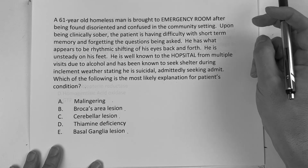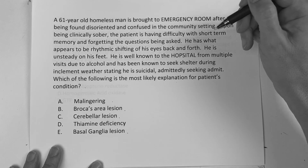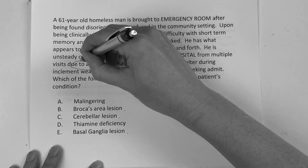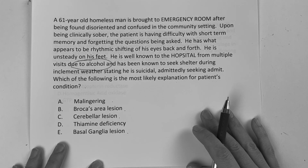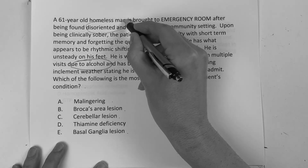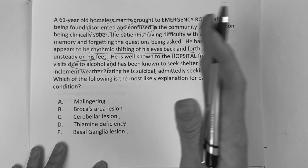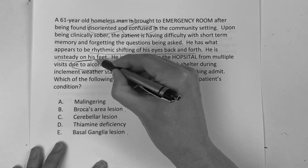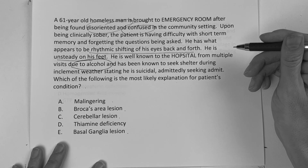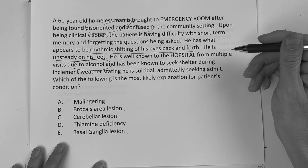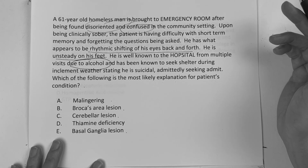So what do we know about this guy? He's disoriented — he's an alcoholic. When he's clinically sober he's still confused and disoriented. There's this rhythmic shifting of his eyes back and forth, and he's unsteady on his feet. But he's known to the hospital for always saying, you know, if it snows or bad weather, he's like yeah, I'm suicidal, I want to be admitted.